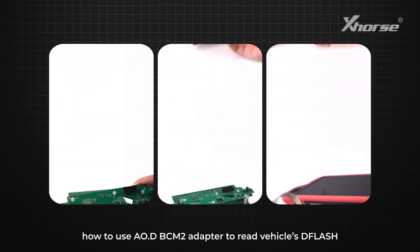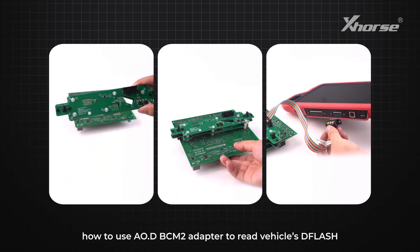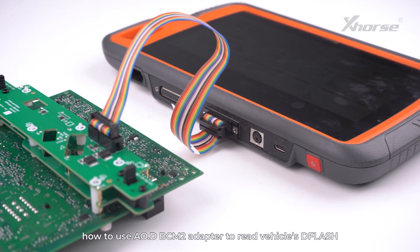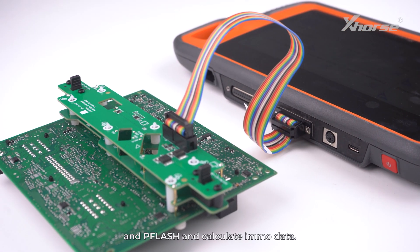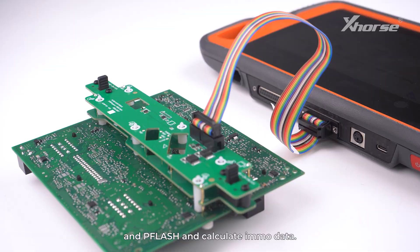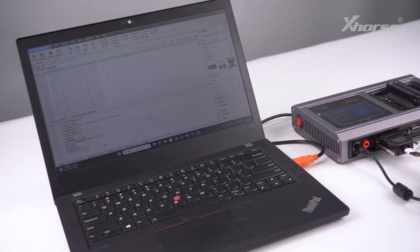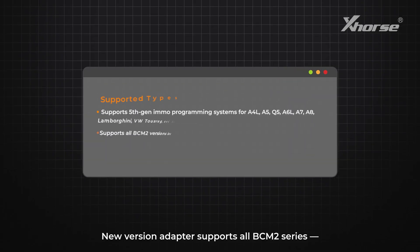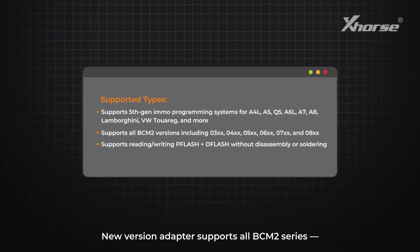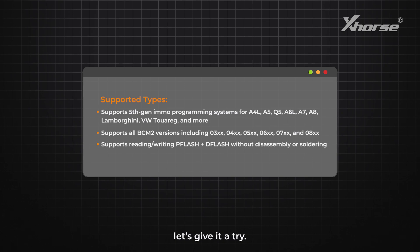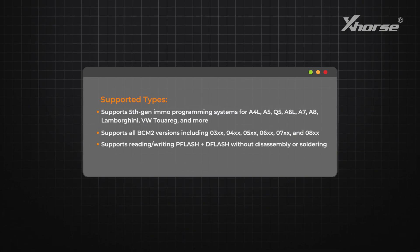Today we'll demonstrate how to use the Audi BCM2 adapter to read a vehicle's D-Flash and P-Flash and calculate IMMO data. The new version adapter supports all BCM2 series. Let's give it a try.